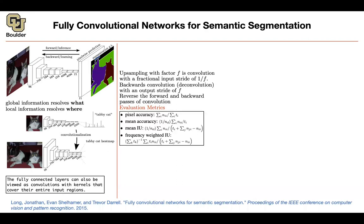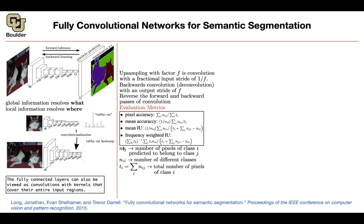So what are our evaluation metrics here? They are going to be pixel accuracy, mean accuracy, mean intersection over union, and frequency-weighted intersection over union. You're going to have a confusion matrix-like matrix where the i by j entry is the number of pixels of class i that are predicted to belong to class j. You count these numbers per pixel throughout your entire dataset to get a matrix, and from that you can compute all four metrics.